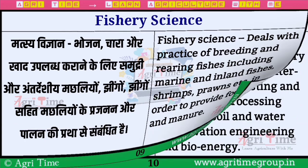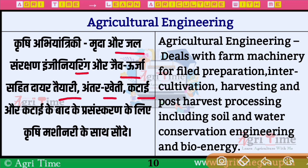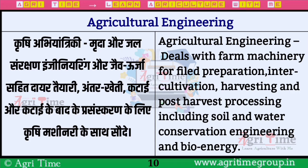अगला branch है Agricultural Engineering, यानि कि कृषि अभियांत्रिकी। इसमें मृदा और जल संरक्षण, engineering और जैव ऊर्जा सहित, दायर तैयारी, अंतर खेती, कटाई और cutting के बाद के pressure के लिए Krishi machinery के साथ सौदा करना है — यानि कि कृषि के उत्पादन को कम समय में अधिक करना है।